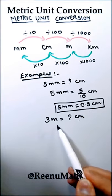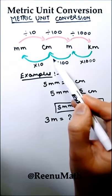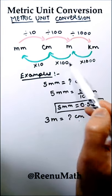Another example is how much is 3 meters in centimeters? So when we move from meter to centimeters we need to multiply by 100.